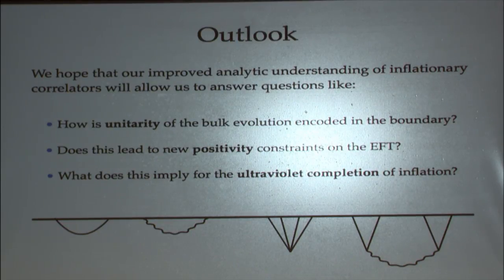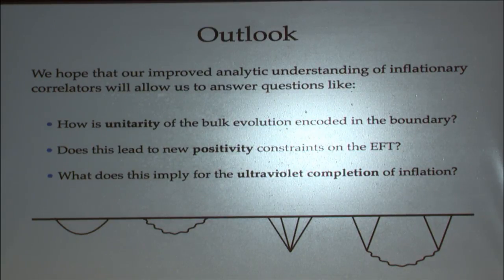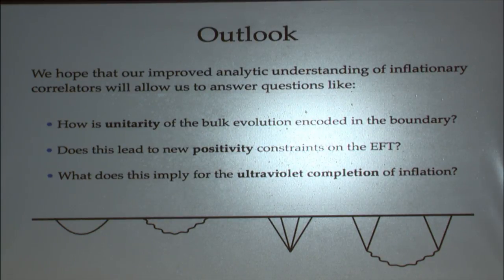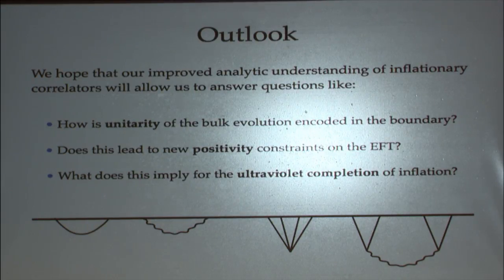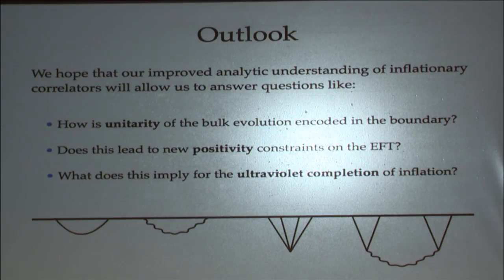We have achieved a new analytic understanding of these correlators, and hopefully we can ask questions like what happens at loop level. It would also be nice to understand how time evolution in the bulk is encoded in the momentum dependence on the boundary, and how unitary evolution in the bulk is reflected in the boundary. In naive dS/CFT we don't have a unitary CFT on the boundary, but there should be some remnant of the unitarity of the bulk theory encoded in the boundary. Understanding that unitarity property might lead to new understanding of positivity in the EFT and what that implies for ultraviolet completion of inflation. Thank you very much.